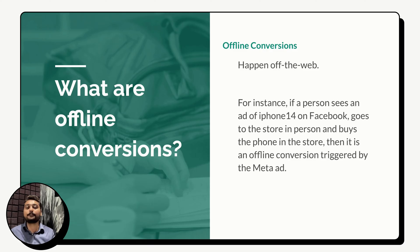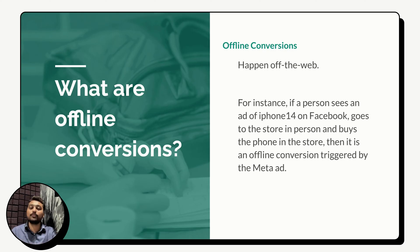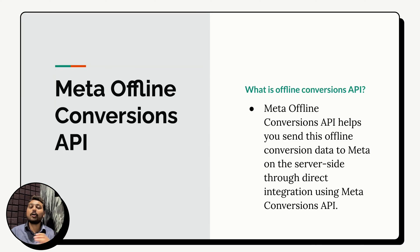For example, if a person sees an ad for an iPhone 14 on Facebook and then goes in person to the Apple Store and purchases the same iPhone 14, that is called an offline conversion triggered by the Meta ad. They saw the ad online, visited the store offline, and made a purchase — that is what offline conversion means.